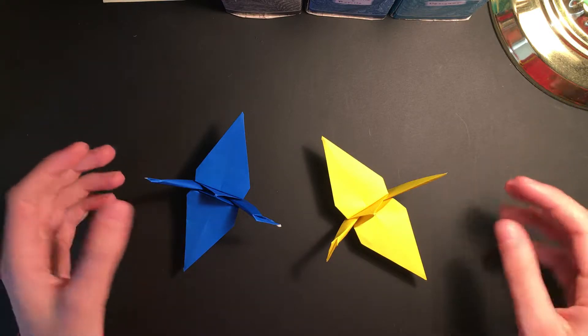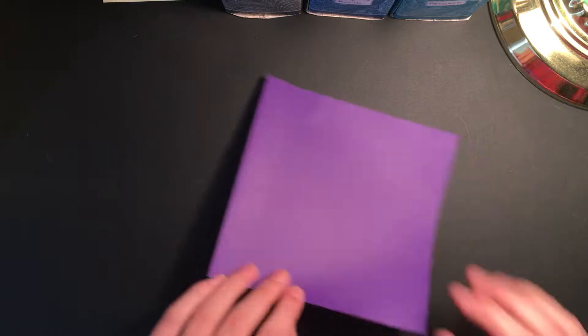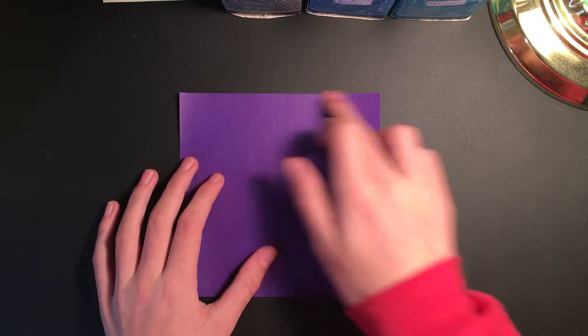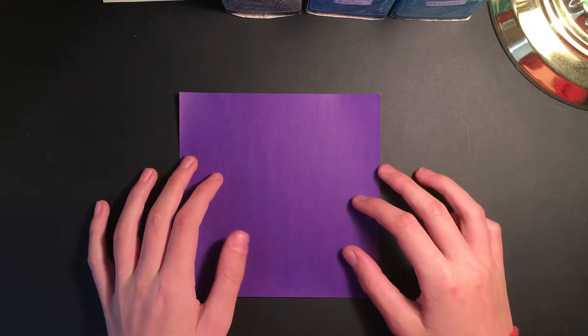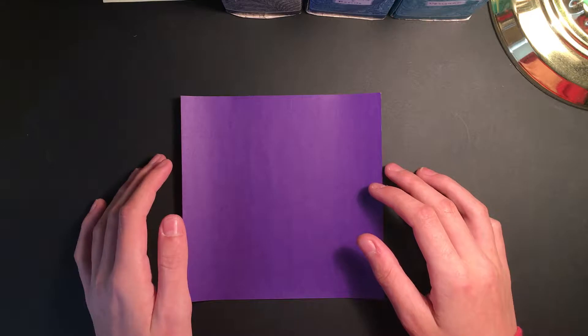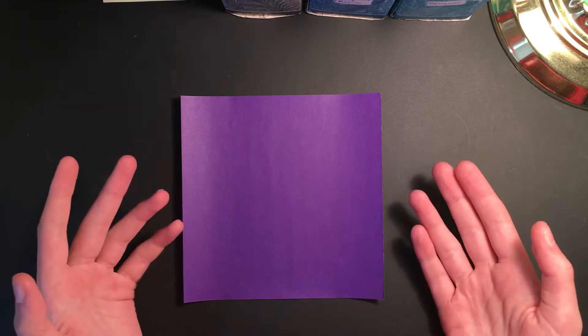Today I'm going to be using my regular origami paper, it's six inches by six inches or fifteen centimeters by fifteen centimeters. For this we're going to start with the color side facing up and turn it so that it looks like a diamond.